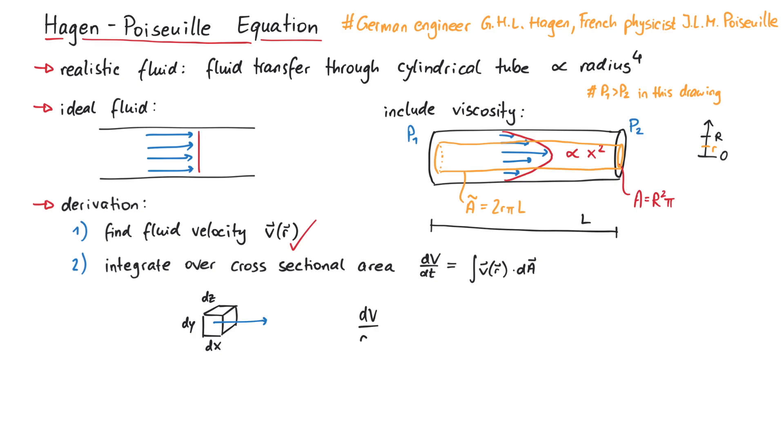This volume moves to the right in x-direction, so the change in volume is given by dx over dt times dy and dz. dx over dt is velocity, and in order to cover the whole pipe, we need to integrate over dy and dz.